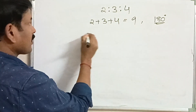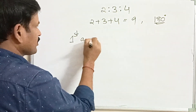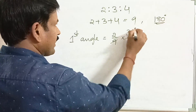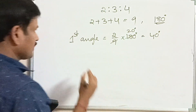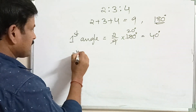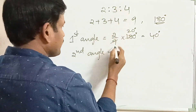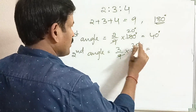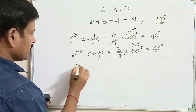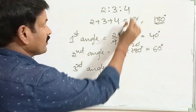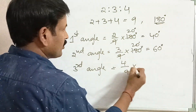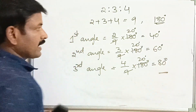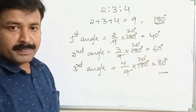The first angle equals 2 by 9 into 180 degrees, which is 40 degrees. The second angle equals 3 by 9 into 180 degrees, which is 60 degrees. The third angle equals 4 by 9 into 180 degrees, which is 80 degrees. Therefore, the three angles of the triangle are 40 degrees, 60 degrees, and 80 degrees.